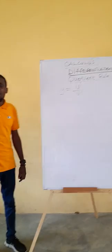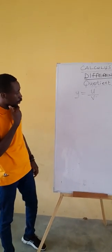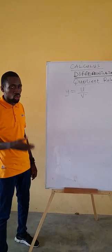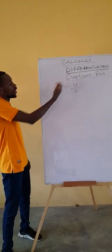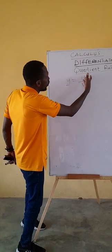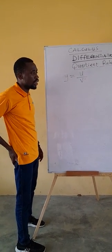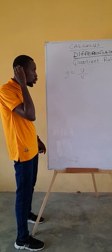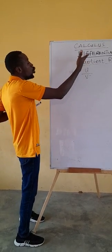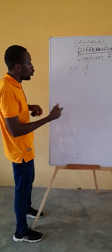Quotient rule is a rule in calculus and differentiation. When do we use the quotient rule? We use quotient rule when there is a fraction where we have a numerator and denominator. The rule to use is quotient rule — we let the numerator be equal to u and the denominator